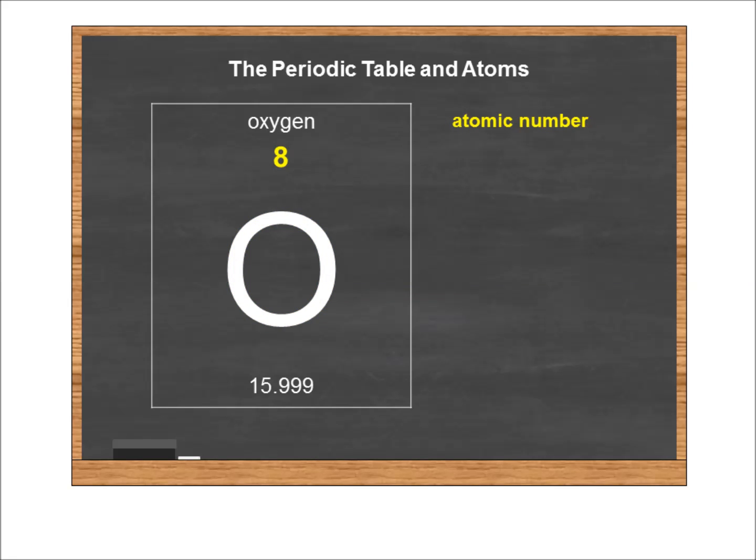Up top, we have the atomic number, which is a whole number. The atomic number is unique to each element, and it represents the number of protons in the nucleus of that element. Atoms are electrically neutral. If it's called an atom, it's electrically neutral.